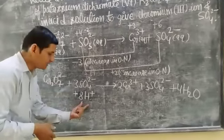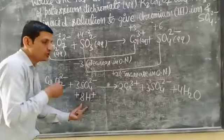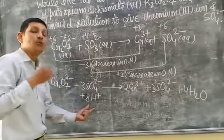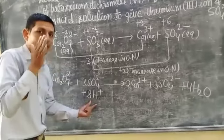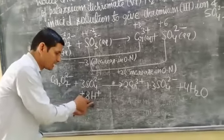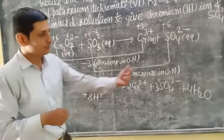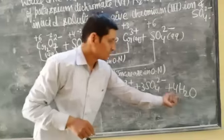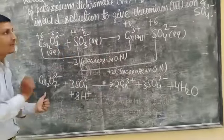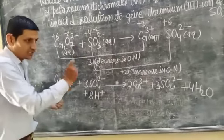To balance the hydrogen atoms, use water molecules. The number of water molecules equals half the number of hydrogen ions. Here there are 8 hydrogen ions, so half of 8 is 4, giving 4H₂O. This gives the final balanced chemical equation.